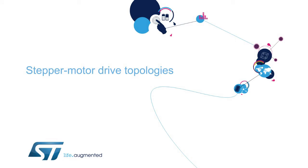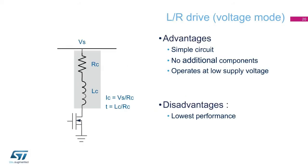Now that we have discussed the basic drive sequences for stepper motors, we will look at some common driver topologies. The simplest drive topology is to drive the motor with the rated voltage and simply switch the coils in sequence as seen in full step or half step. When the phase is energized, the current will increase exponentially until it reaches a value equal to the supply voltage divided by the motor resistance. The time constant of the exponential is L divided by R, which gives rise to the name L over R drive. This drive configuration is very simple and operates from a single supply voltage. However, it is relatively low performance in terms of the speed-torque profile.